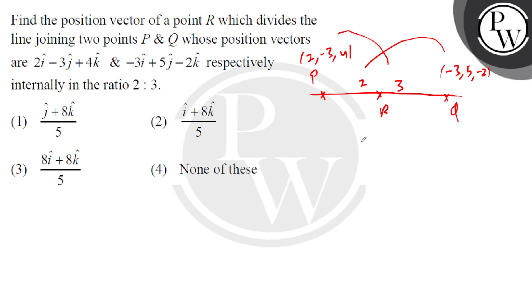So that is minus 6 plus 6 which is 0, then 10 minus 9 that is 1 j cap, and k cap is minus 4 plus 12 that is plus 8 k cap.